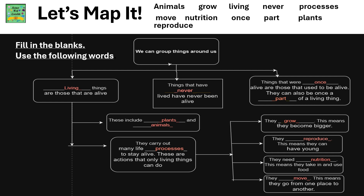We can group the things around us into three groups. Living things are those that are alive — these include plants and animals. They carry out many life processes to stay alive. They grow, meaning they become bigger. They can reproduce to have young ones. They need nutrition so they take in food, and they move from one place to another.